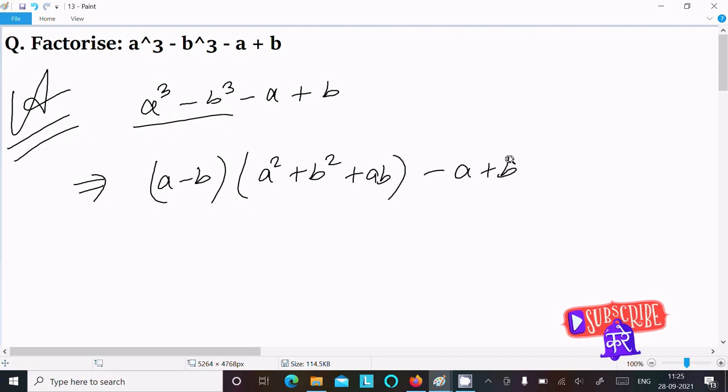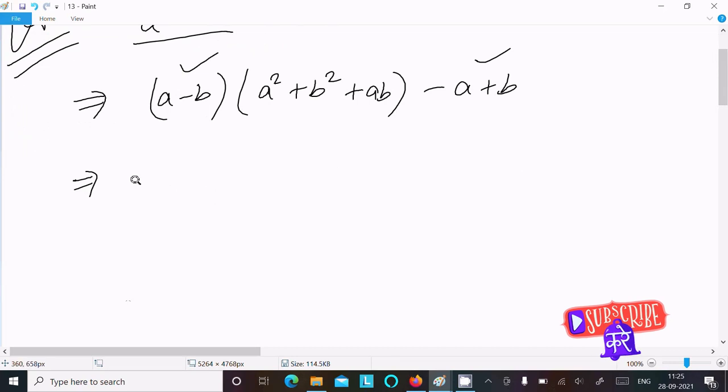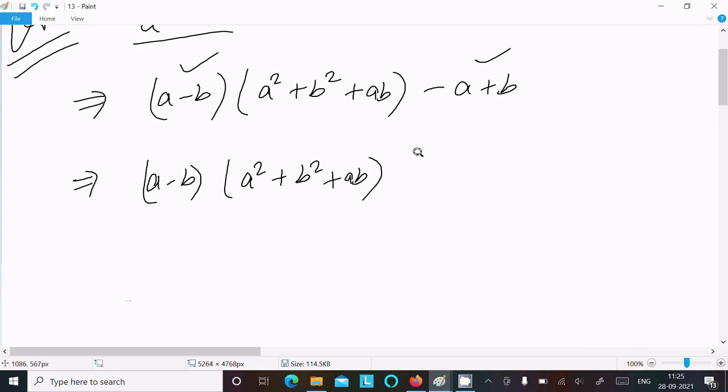And here minus a plus b. Now here you can see minus a plus b. So what I am trying to do: write this a²+b²+ab. From here I